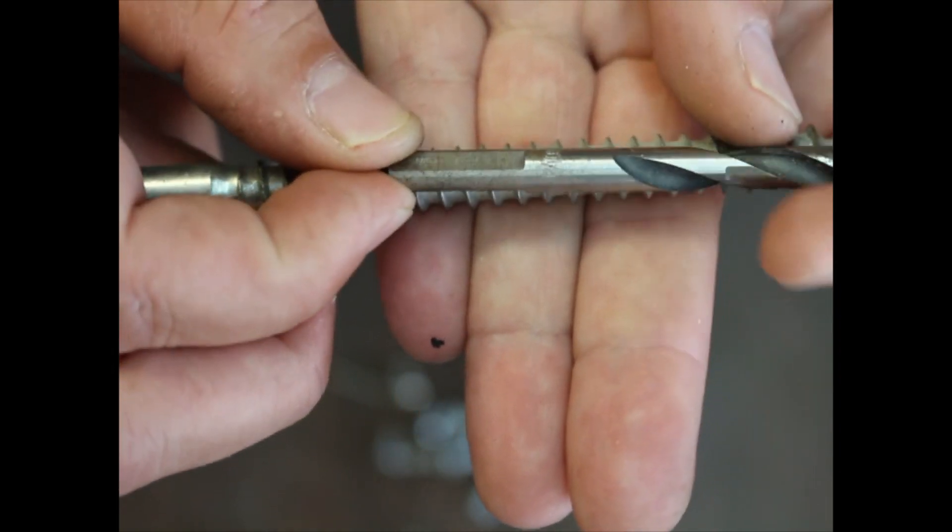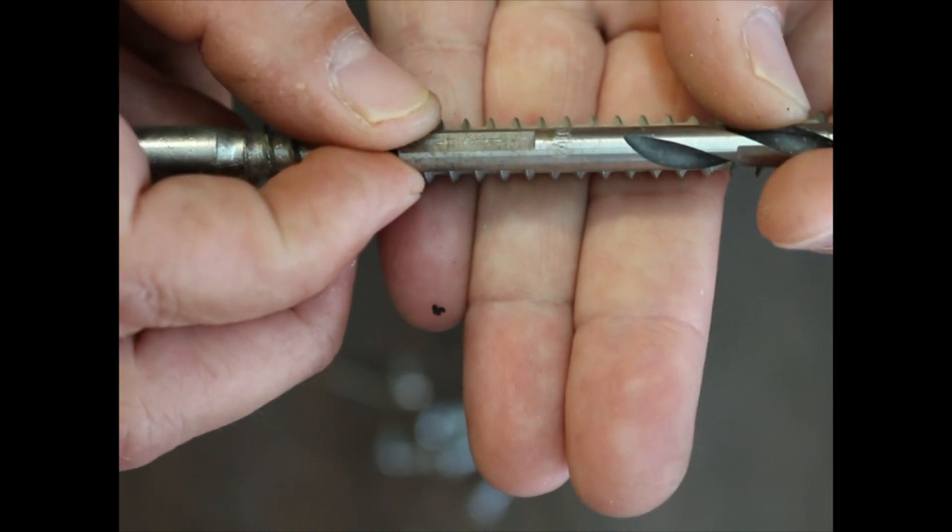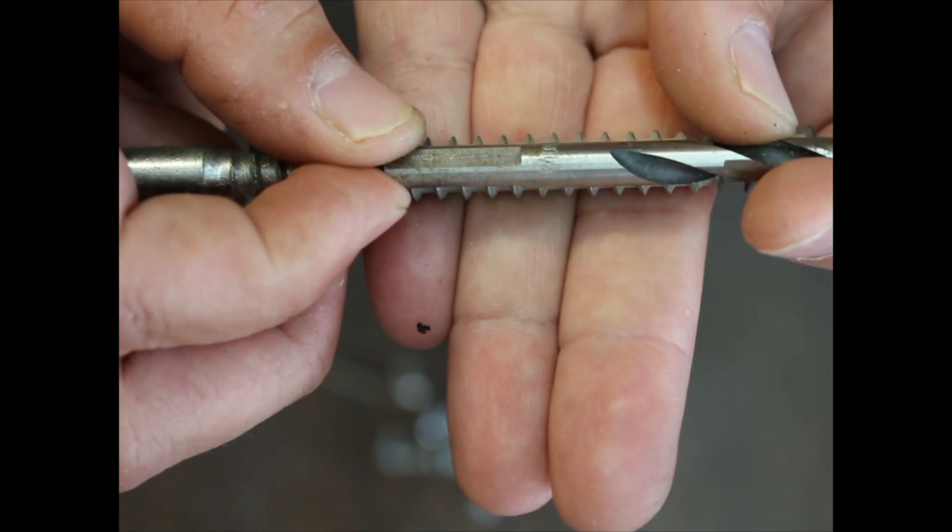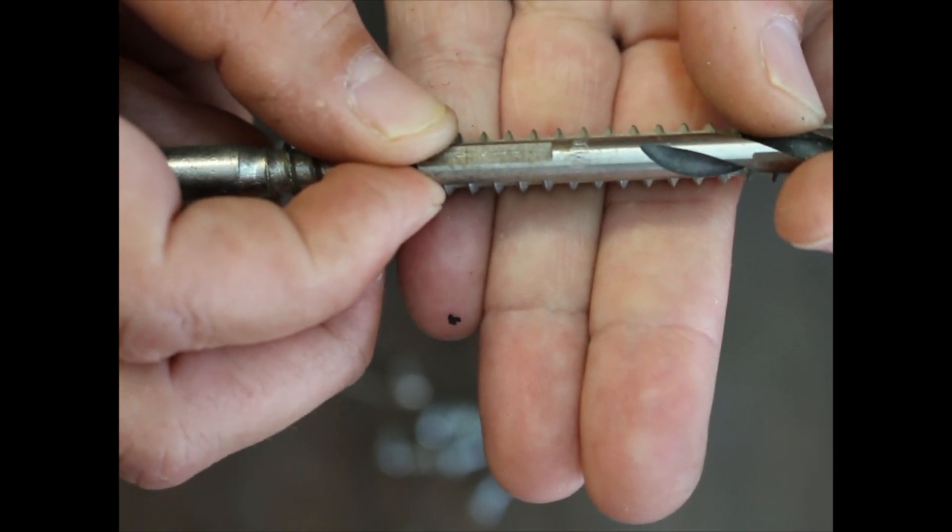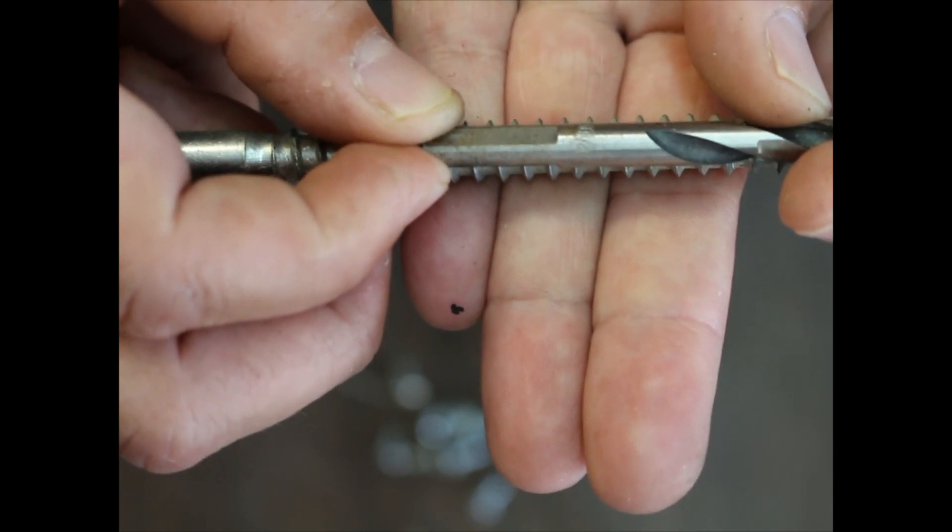Look at that—see how you can see the threads perfectly behind the drill bit? That's the right size drill bit to drill a pilot hole.